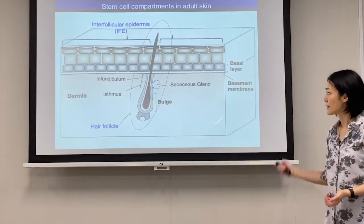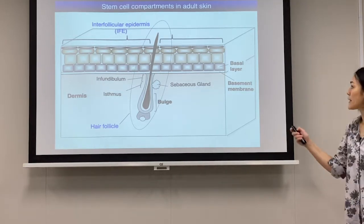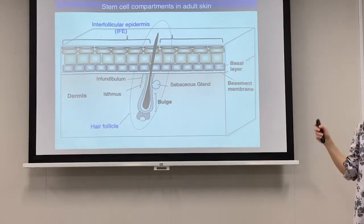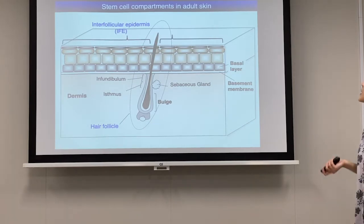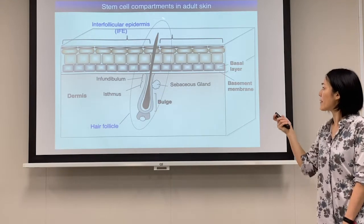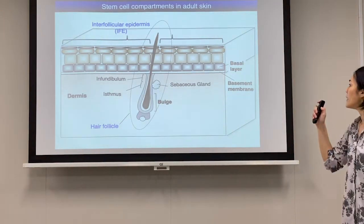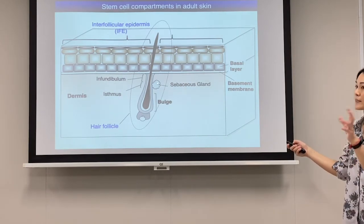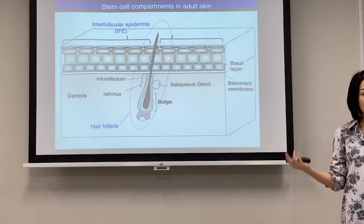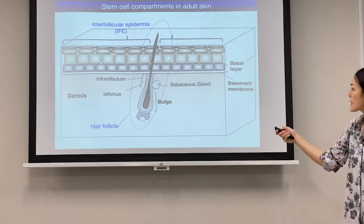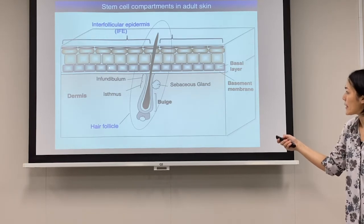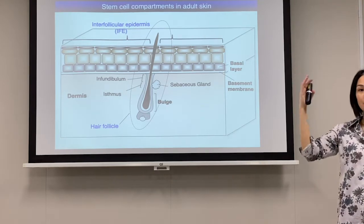In my study, I used skin as a model. Skin is divided into the epidermis, the uppermost layer, and dermis. Those epidermal compartments accommodate different stem cell populations. For example, stem cells in the bulge region regenerate the hair, and stem cells for the sebaceous gland regenerate the sebaceous gland. In the interfollicular epidermis, which is essential for skin barrier function, stem cells reside in the basal layer of the epidermis right above the basement membrane, and they divide and differentiate upwards to make epidermal cells.